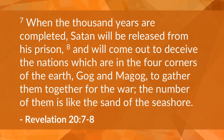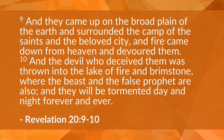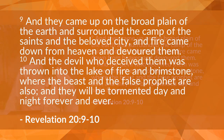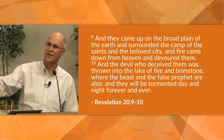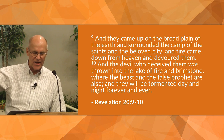Verses 7 to 10: 'When the thousand years are completed, Satan will be released from his prison and will come out to deceive the nations in the four corners of the earth, Gog and Magog, to gather them together for the war. The number of them is like the sand of the seashore. And they came up on the broad plain of the earth and surrounded the camp of the saints and the beloved city, and fire came down from heaven and devoured them. And the devil who deceived them was thrown into the lake of fire and brimstone, where the beast and the false prophet are also. And they will be tormented day and night, forever and ever.' This is the victory — see how quickly it goes by? The victory is highlighted by Satan's final destruction.